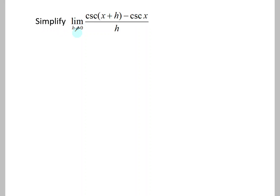Simplify the limit as h approaches zero of cosecant of x plus h minus cosecant of x divided by h. Notice this looks familiar because this means the derivative of a function f with respect to x.